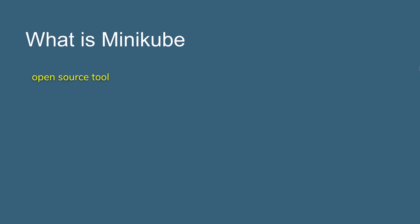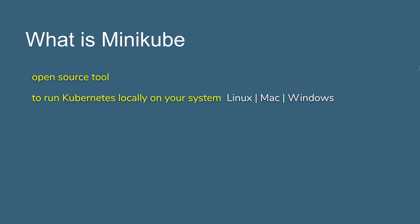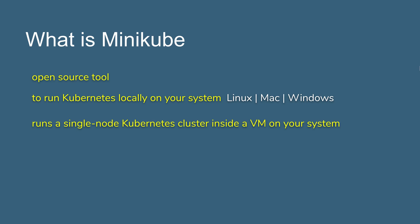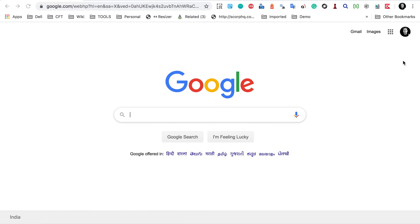So what is Minikube? Minikube is an open source tool and it is used to run Kubernetes locally on our system — on our laptop or desktop. We can use this on Mac, Windows or Linux operating systems, and it runs a single node Kubernetes cluster inside a virtual machine on our system. So let me go to Google and search for what is Minikube.